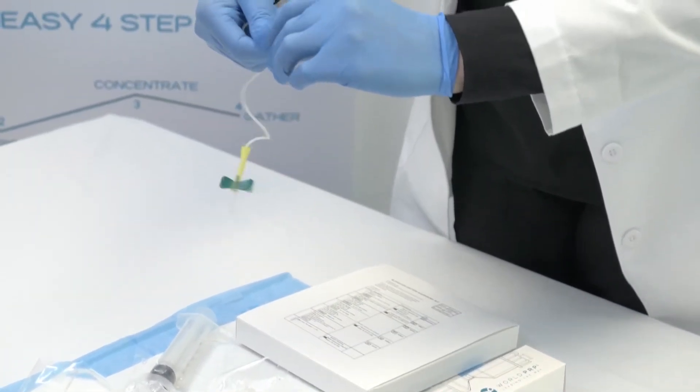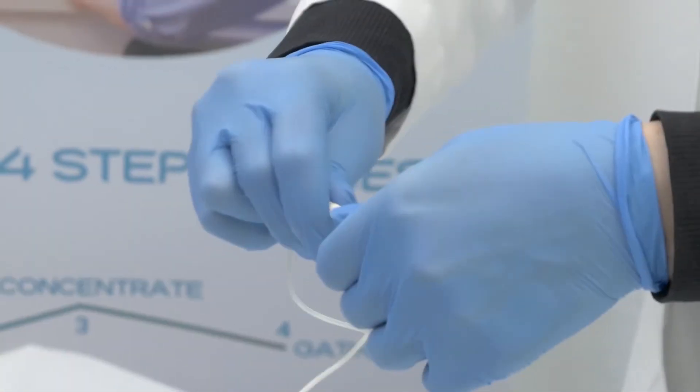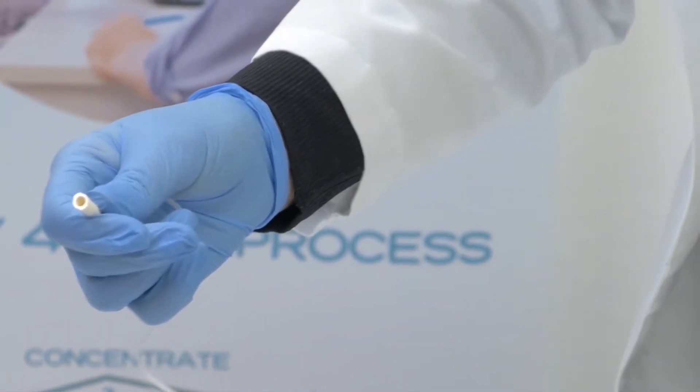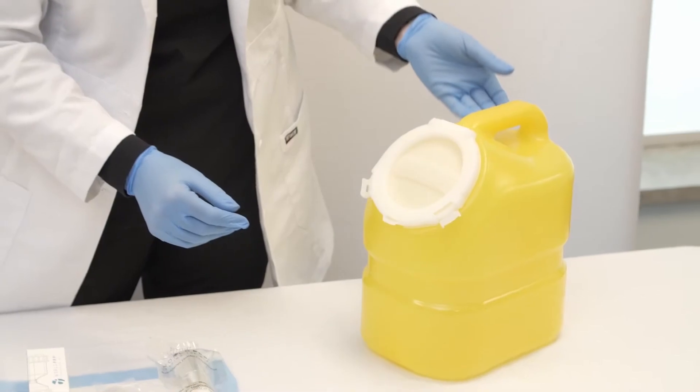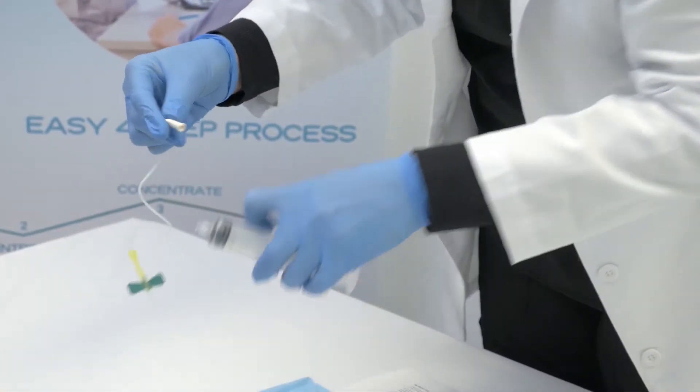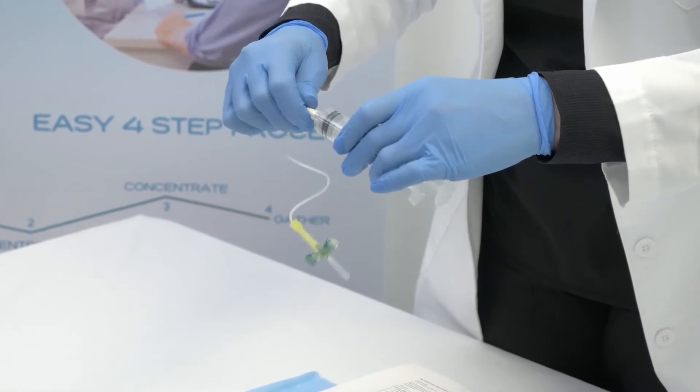Next, take the butterfly blood collection set and pull away the dark grey tip. Be careful as there is a needle within the dark grey tip. Place into the sharps container. Attach the butterfly needle to the 30 ml syringe.